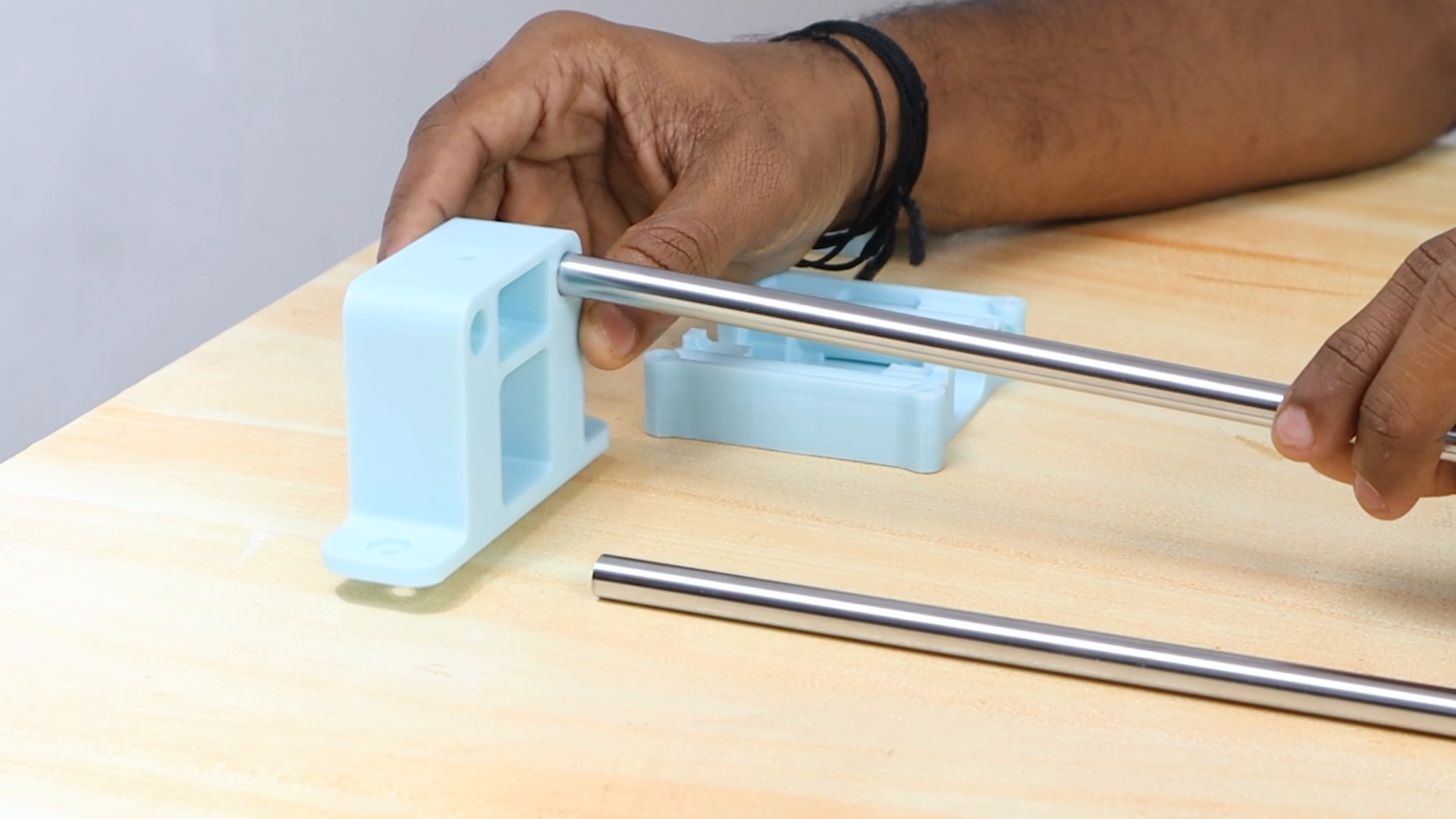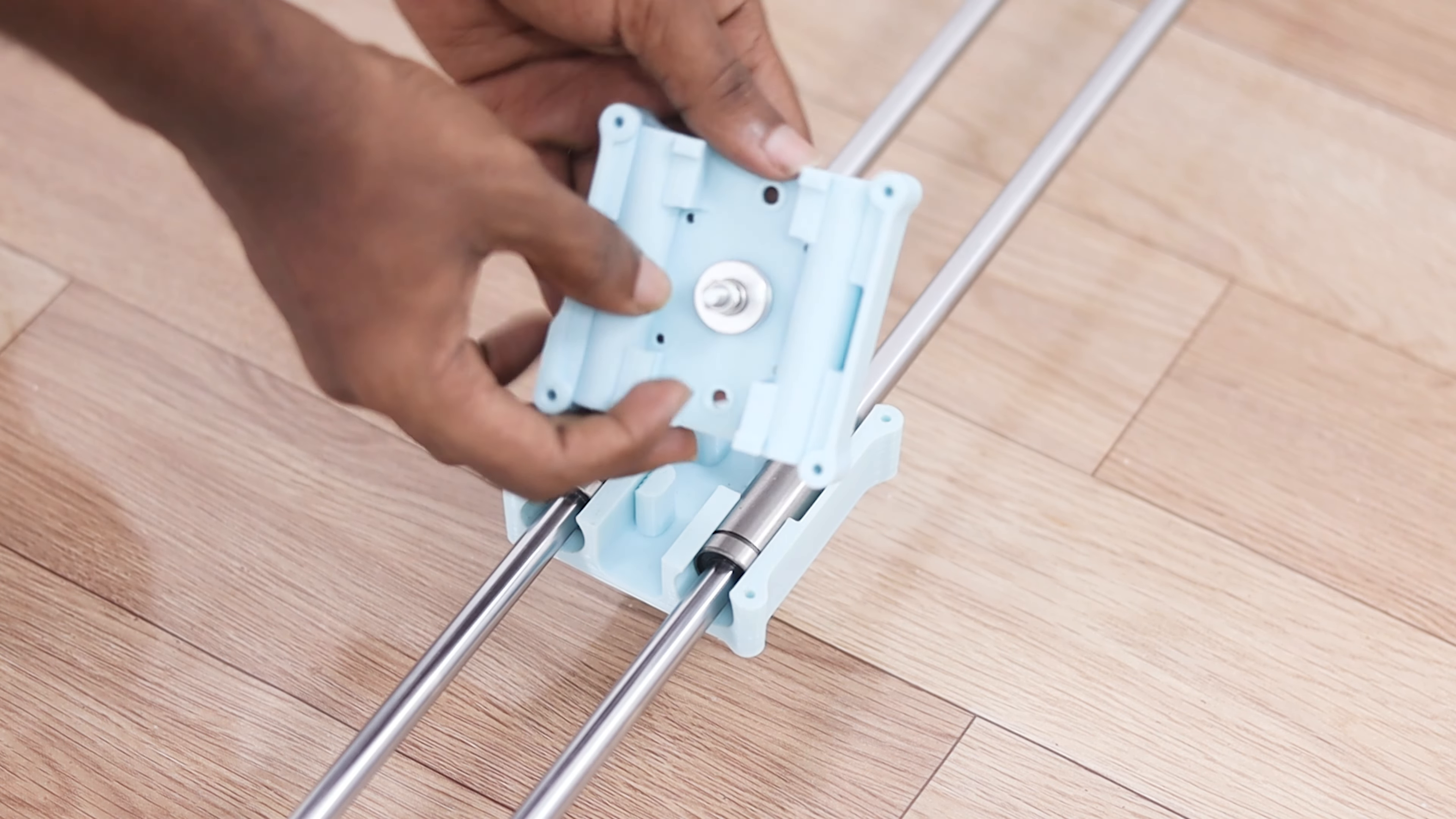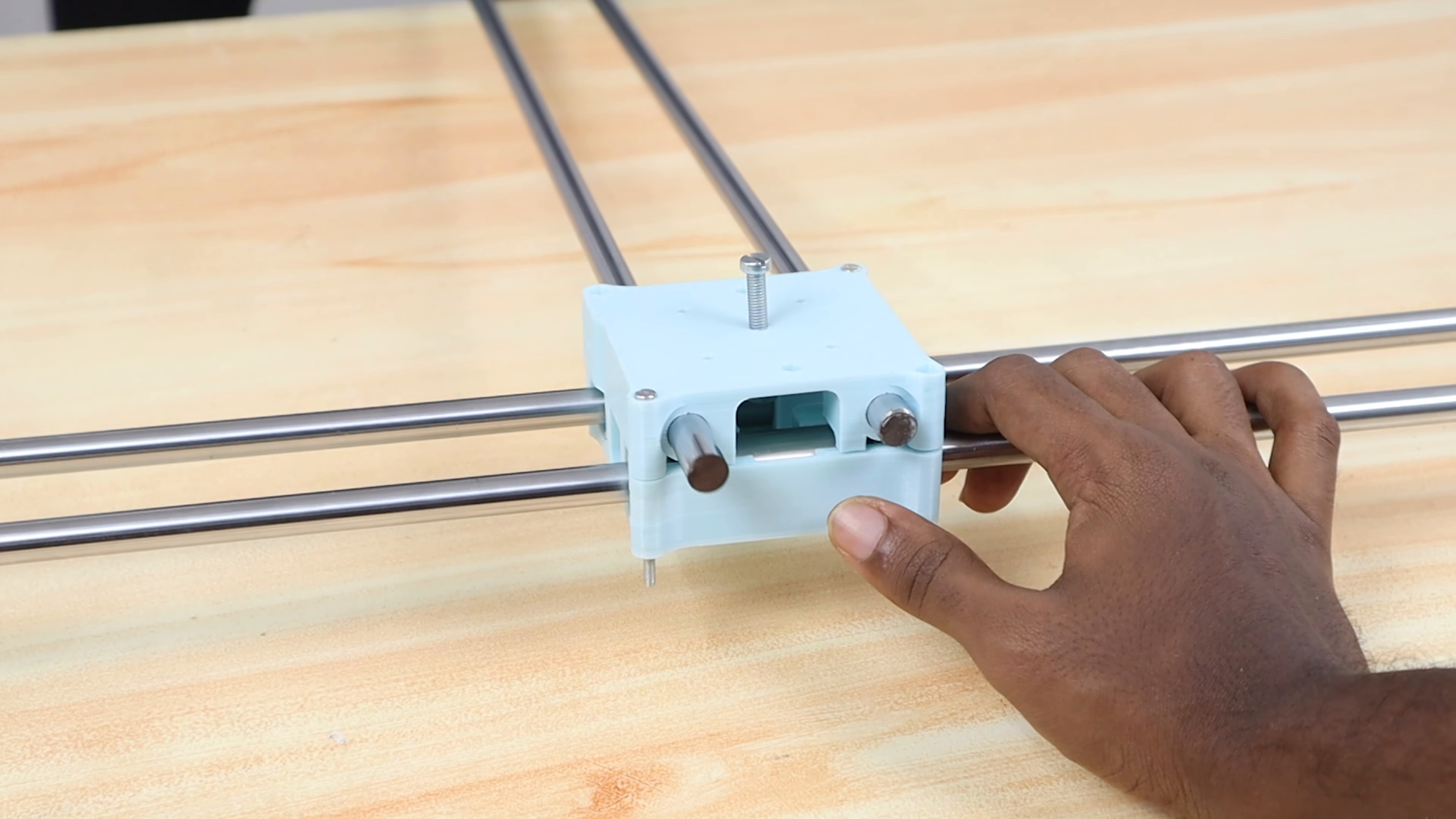It's time to build the axis parallel to the X axis which is actually the same with some minor changes. The only change is that we attached an idler pulley instead of the motor by using M5 by 30mm screws. It's time to connect these two axes with another two linear rods.